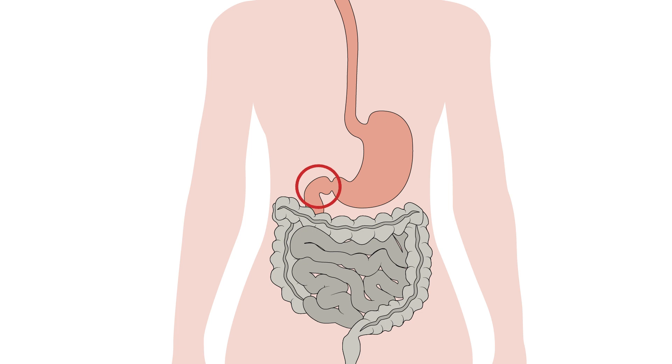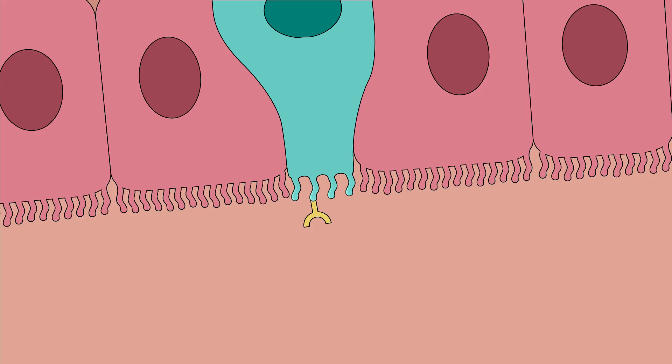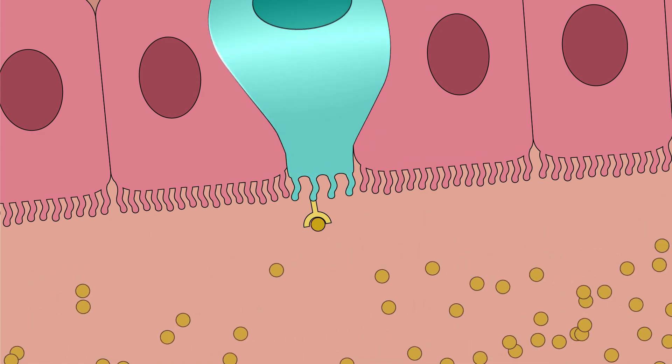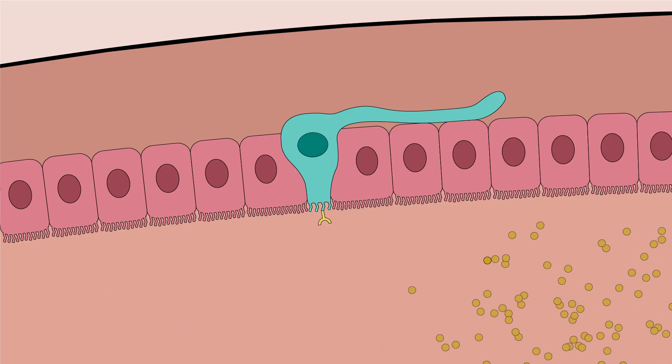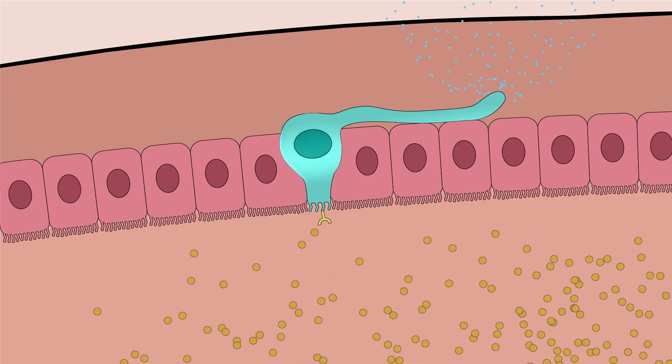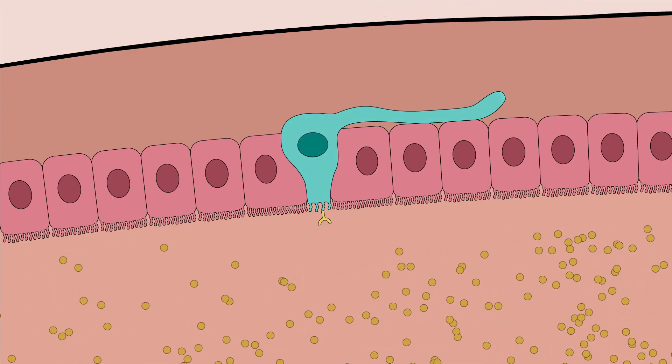The upper small intestine contains a concentrated area of cells with receptors specific to the amarasate bitter compound. When the bitter compounds in amarasate bind to these bitter taste receptors, the cell releases satiety hormones that send a message to the brain that you are feeling full.